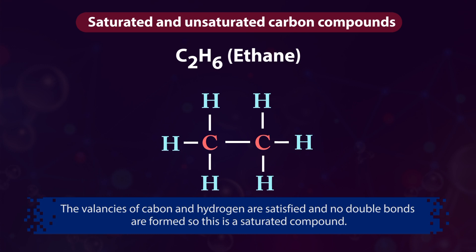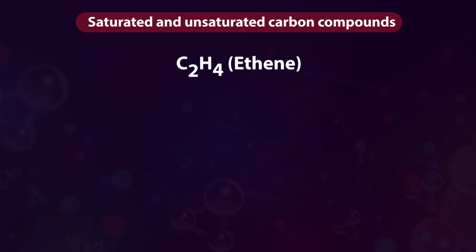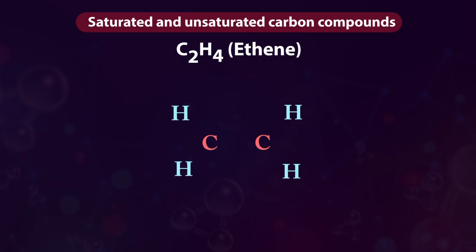Now let us write the structure of C2H4 — Ethene. First link carbon with carbon using a single bond, then link two hydrogens with one carbon and two hydrogens with the other using single bonds. The valences of hydrogen are satisfied but the valences of the carbon atoms are not satisfied.